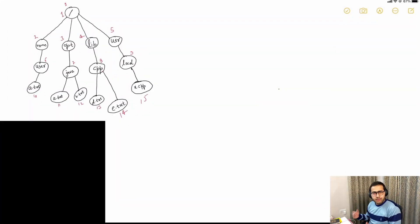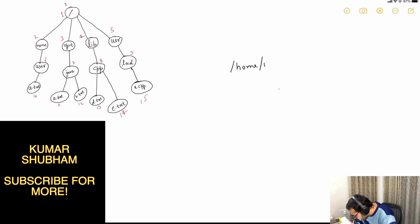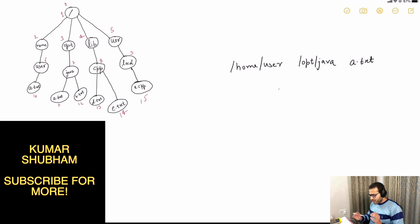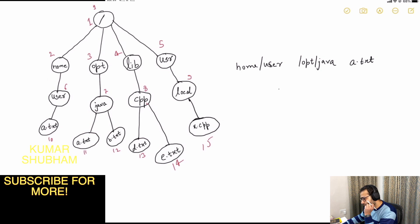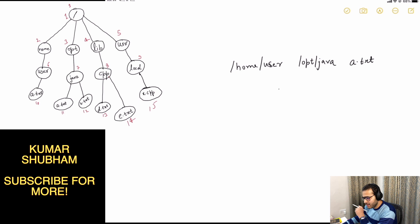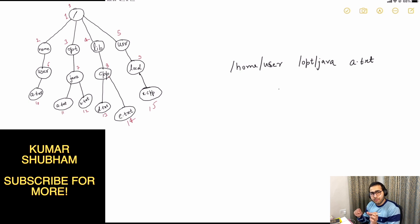Let's consider an example and dive into the algorithm. We have to move the file from source slash home slash user to destination slash opt slash java, with the file name a.txt. The inputs given to us are in the form of IDs — 1, 2, 3, 4, 5, 12, 15 — and we have to find a way to map these path names to these IDs.